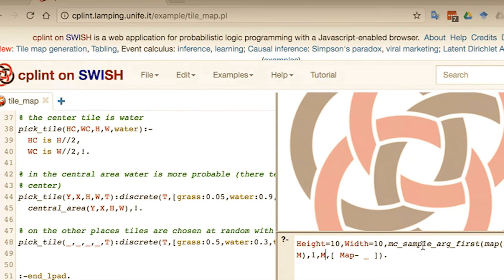MC sample arg first takes the goal to query as first argument, the number of samples to take, one in this case, so we want to generate a single map, and the argument you want to sample, which is M, so you want to sample the map. Actually, this MC sample arg first predicate returns a list of values, because usually you take more than one sample. It returns the list of values together with the number of times it has appeared in the sample. In this case, the result is a list, and since you take one sample, it contains a single element, and you want the first element of the couple, which is a map.